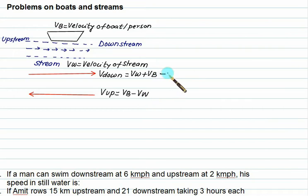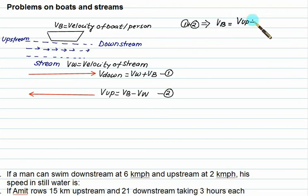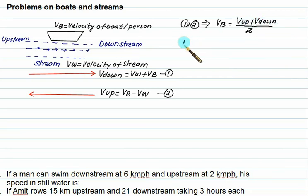These are equation 1 and equation 2. What is equation 1 plus equation 2? The Vw terms cancel, and we get velocity of boat equals velocity of upstream plus velocity of downstream divided by 2. If we subtract equation 1 minus equation 2, we can find out the velocity of stream, that is water.